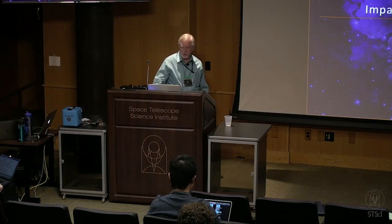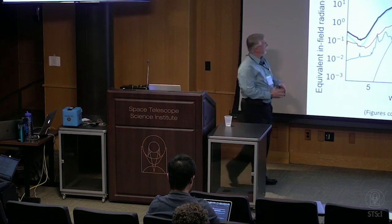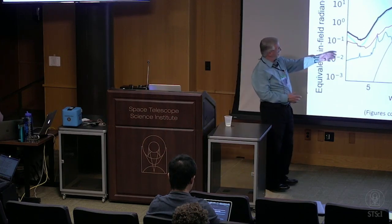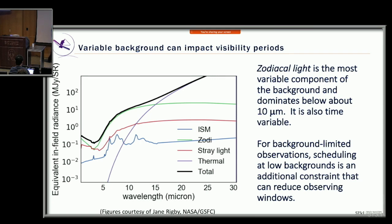The background tool: Klaus already talked about the different components to the background as a function of wavelength. At longer wavelengths, thermal emission from the telescope is the dominant source. The other big variable component is the zodiacal light — the green curve — which varies with time of year and position on the sky. That's what the backgrounds tool provides information about.